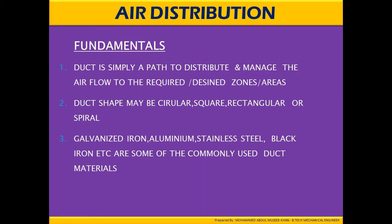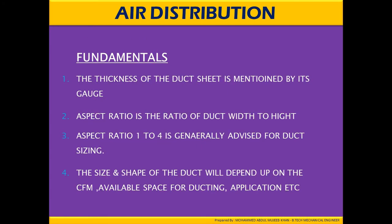Galvanized steel, aluminum, stainless steel, black steel, iron, etc. are commonly used duct materials. The thickness of the duct sheet is measured by its gauge. Aspect ratio is the ratio of the duct width to height, and an aspect ratio of 1 to 4 is generally advised for duct sizing. The sizes and shapes of the ducts will depend upon the CFM, available space for ducting, application, etc.